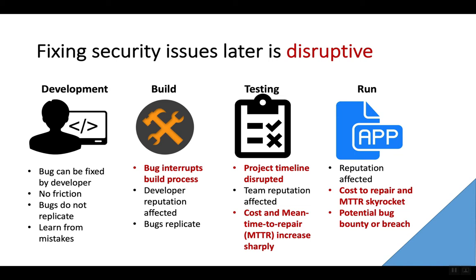If the bug escapes into the build process, we start to see the build process itself getting interrupted, and this slows down the project. The developer's reputation might be impacted, and bugs start to replicate. If a bug makes it all the way into the testing unit, then the project timelines are probably going to be disrupted, because we'll need to send that bug back to the development phase in order to get patched so it can eventually work its way back up into testing. We also have the mean time to repair going up quite a bit, as the amount of work it takes to fix the bug gets bigger and bigger in these later phases.